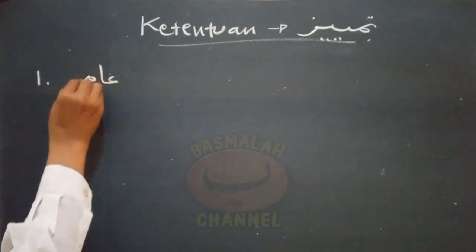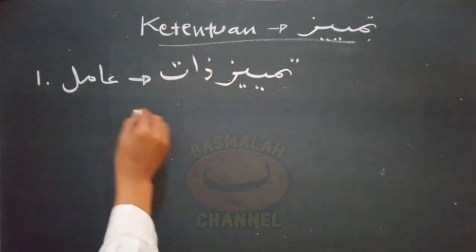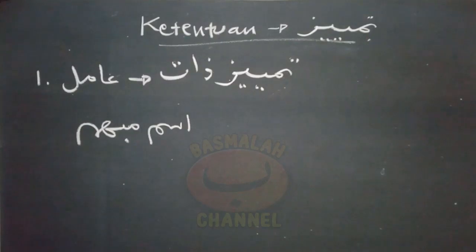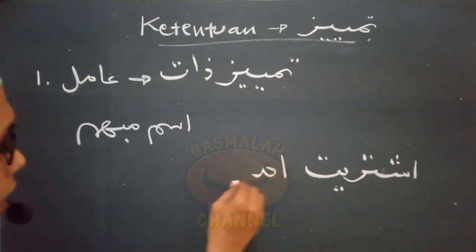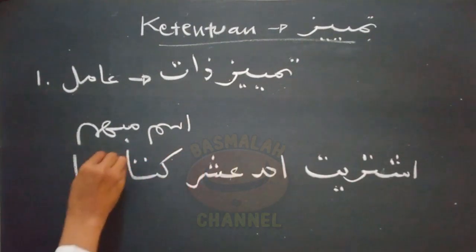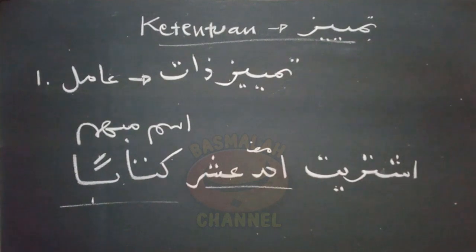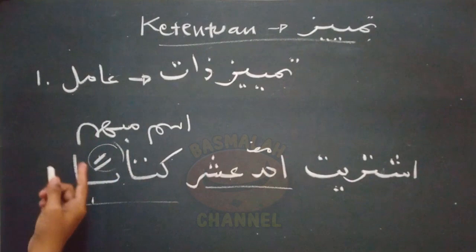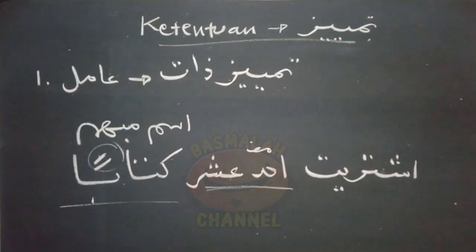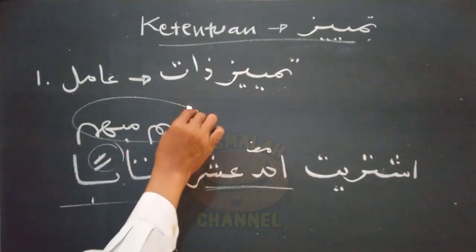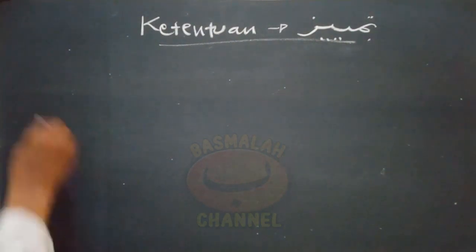Yang pertama adalah, amil daripada Tamyis itu adalah Isim Mubaham. Kita ambil contoh seperti lafad 'Ishtaraitu Ahadah Asyarah Kitaban' — saya membeli sebelas kitab. Lafad 'Kitaban' ini adalah Tamyis yang i'rabnya adalah Nasob, dan yang menasobkan Tamyis ini adalah amilnya, yaitu lafad 'Ahadah Asyarah'. Jadi amil daripada Tamyis adalah Isim Mubaham, dan lafad 'Ahadah Asyarah' masuk dalam kategori Isim Mubaham, yaitu merupakan Adat Soreh.